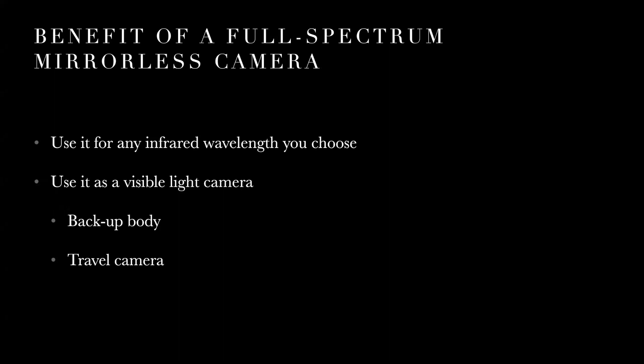There are significant benefits to a full spectrum mirrorless camera. You can use it for any infrared wavelength — just get the right filter, either on your lens or as a rear clip-in filter. You can also use it as a visible light camera with a hot mirror filter. If you're on a trip and want to bring one camera or use it as a backup, just put the hot mirror in. However, without a filter, full spectrum cameras are essentially useless — not very good at all.